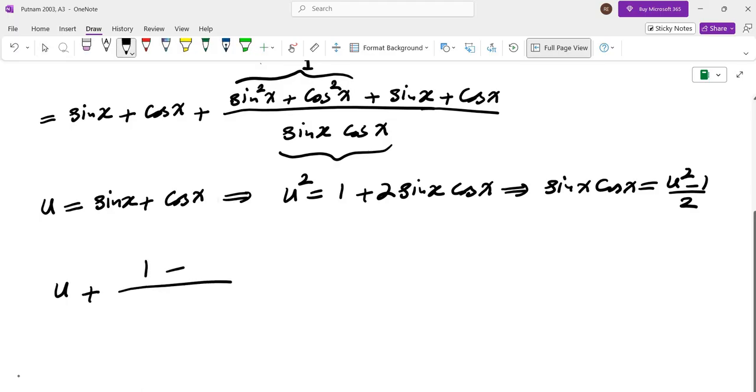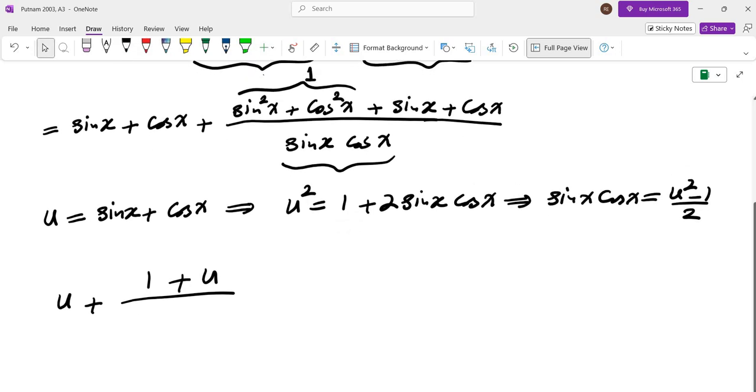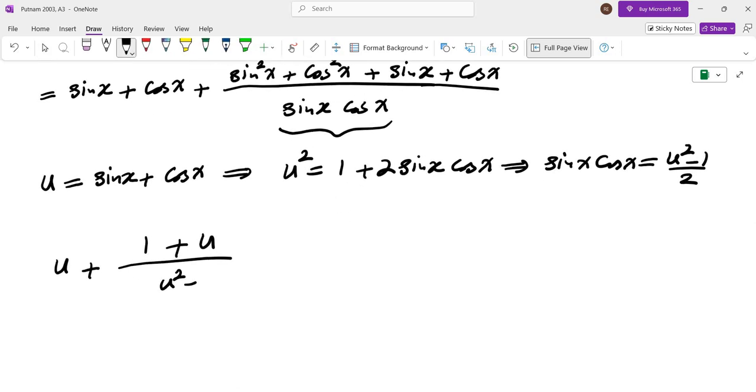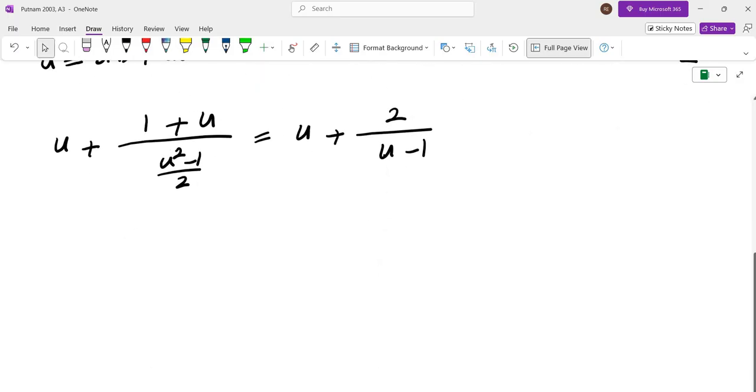We get u plus one plus u on top, and at the bottom, we get u squared minus one over two. This is u plus, we can factor the denominator as u plus one times u minus one. And we have to evaluate the minimum of absolute value of this quantity.